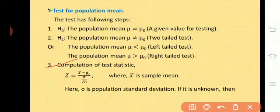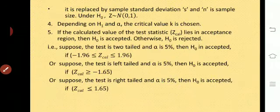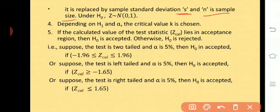Step 3 is computation of the test statistic. Here the test statistic is Z = (x̄ − μ₀) / (σ / √n), where x̄ is the sample mean, μ₀ is the given value of population mean, and σ is the population standard deviation. If σ is unknown, then we use s, the sample standard deviation. The formula for s is: s = √(Σx² / n − (Σx / n)²). This formula was already studied in PUC first year in the standard deviation unit.